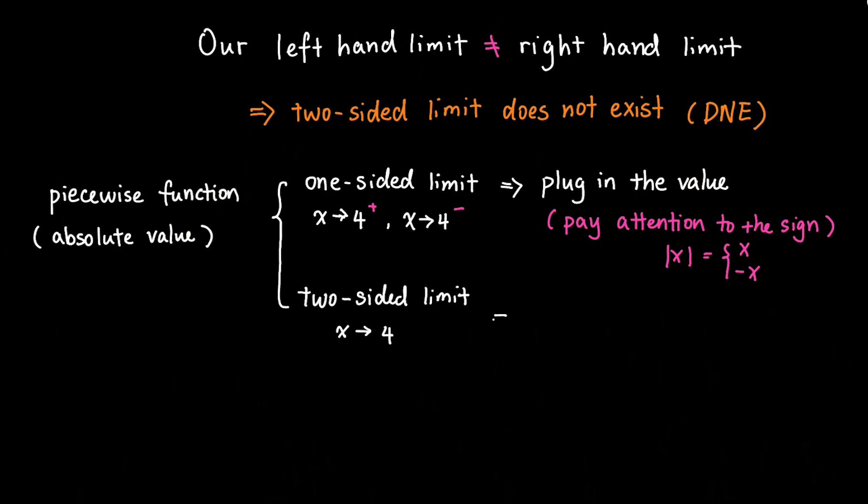And for two-sided limit, you need to calculate one-sided limits separately and compare them. And if they exist and equal to each other, then the limit exists. If not, the limit does not exist.